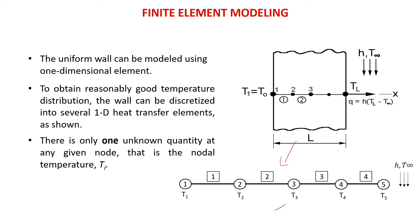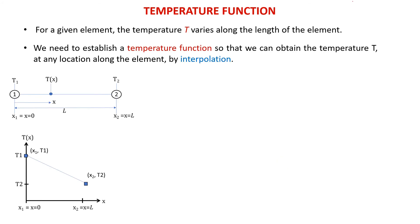There is only one unknown quantity at any given node, which is the nodal temperature, as shown in this figure. So we have five nodes, meaning that there are five temperatures that need to be determined. For a given element, the temperature varies along the length of the element. Therefore, we need to establish a temperature function so that we can obtain the temperature at any location along the element by using interpolation.